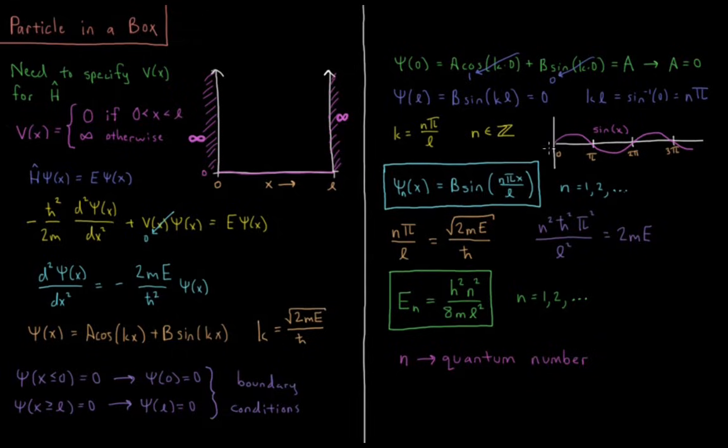If our k is n pi over L, we can substitute that in. Psi n of x equals the constant B times sine n pi x over L. And n is going to be some integer. It's going to start at one, and it's going to go up from there.